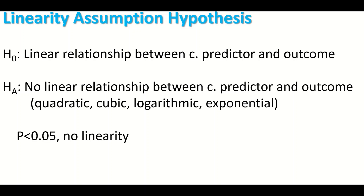Once the hypothesis has been clarified and stated, a test will be performed and a p-value will be generated. If the p-value is less than 0.05, then there is no linearity and the continuous variable cannot be included in the analysis for binary logistic regression — it has to be omitted or removed from the list of predictors.